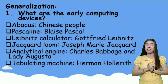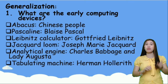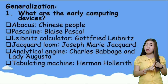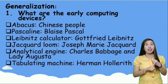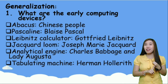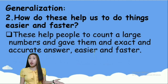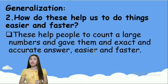I'm so happy to hear that. So now let us review. What are the early computing devices? We have abacus, pascaline, Leibniz calculator, Jacquard loom, analytical engine, and tabulating machine. Very good! How do these things help us to do things easier and faster? We can count large numbers easier and faster. Bravo!